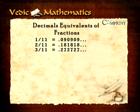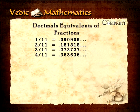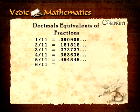Three by eleven equaling 0.272727, and so on. Four by eleven equaling 0.363636, and so on. Five by eleven equaling 0.454545, and so on. Six by eleven equaling 0.545454, and so on.